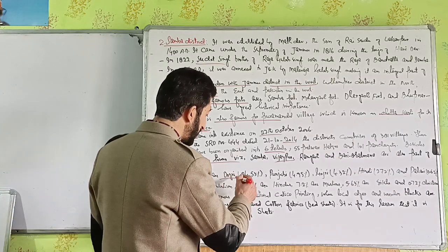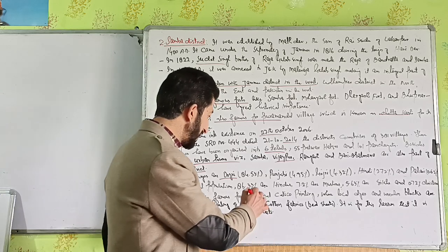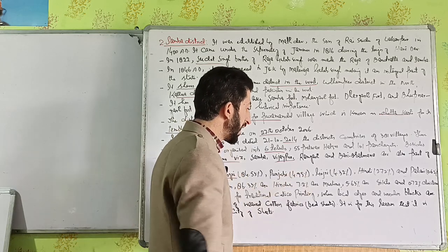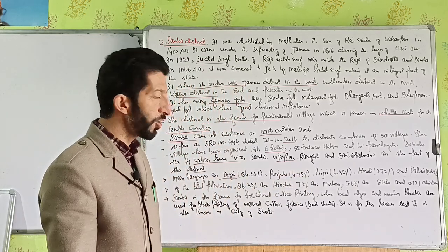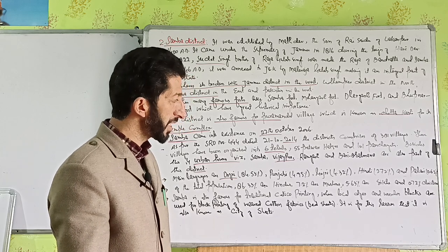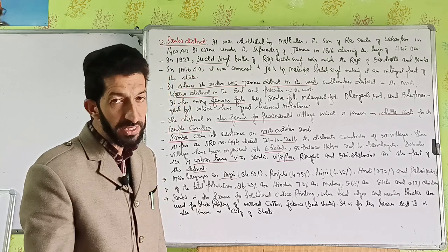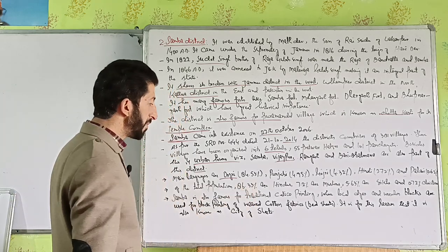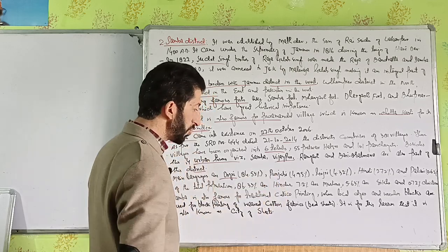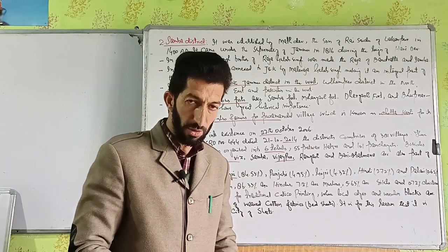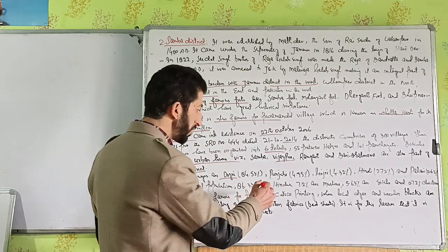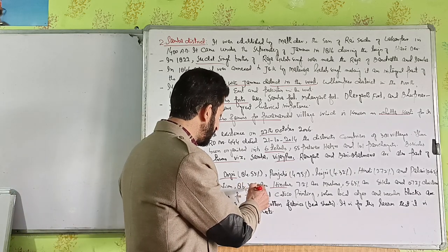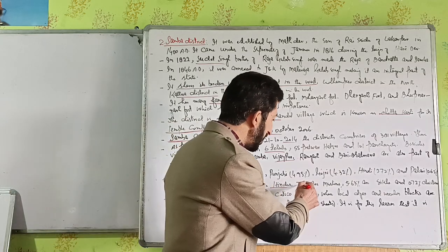Language-wise, Dogri is 84.53 percent, Punjabi 4.95 percent, Gojri 4.32 percent, Hindi 2.72 percent, and Pahari 0.62 percent. Of the total population, 86.33 percent are Hindus, 7.2 percent Muslims, 5.63 percent Sikhs, and 0.72 percent Christians.